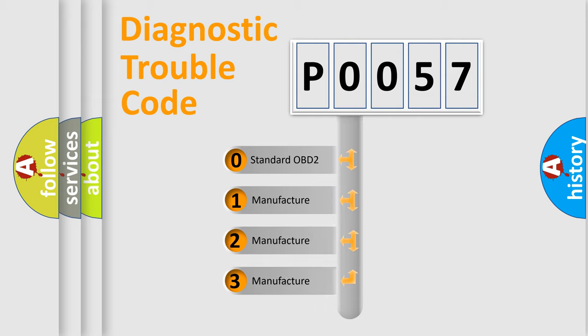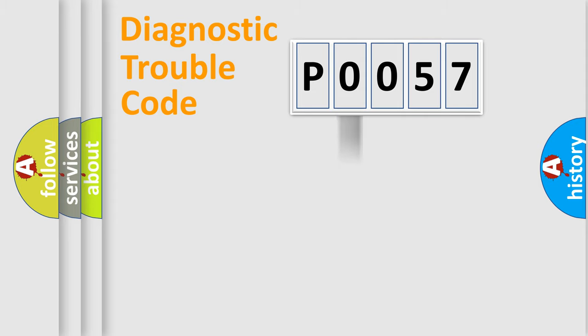If the second character is expressed as zero, it is a standardized error. In the case of numbers 1, 2, or 3, it is a more precise expression of the car-specific error.